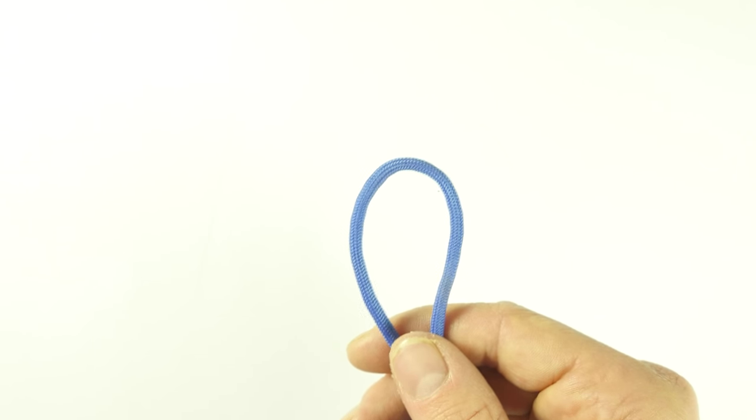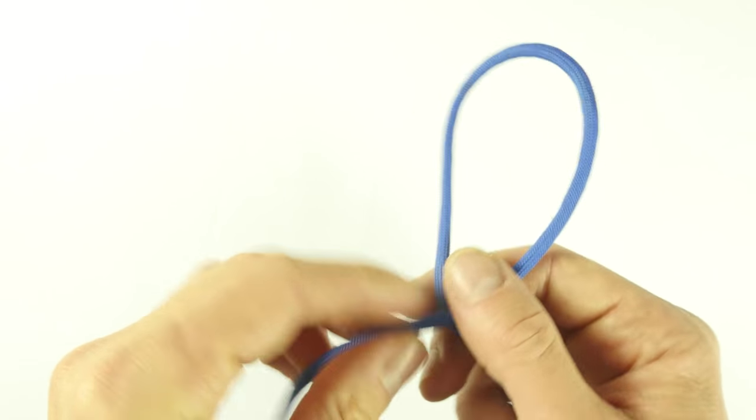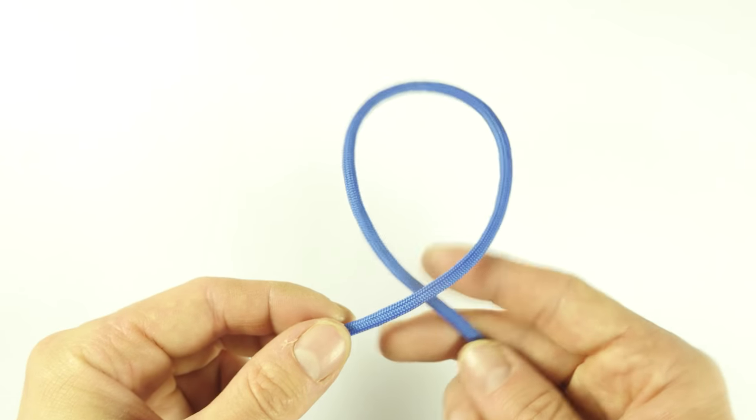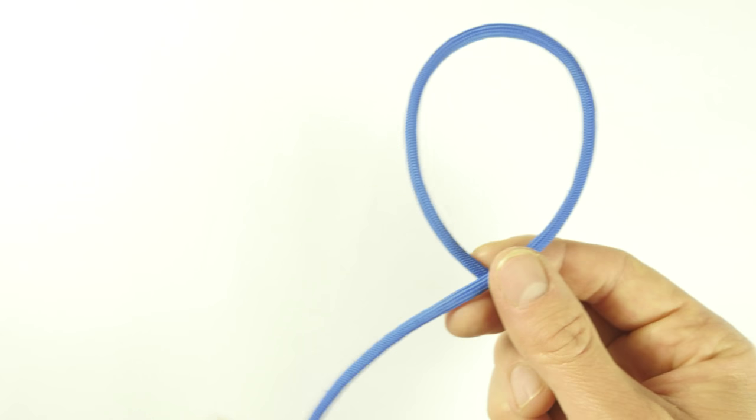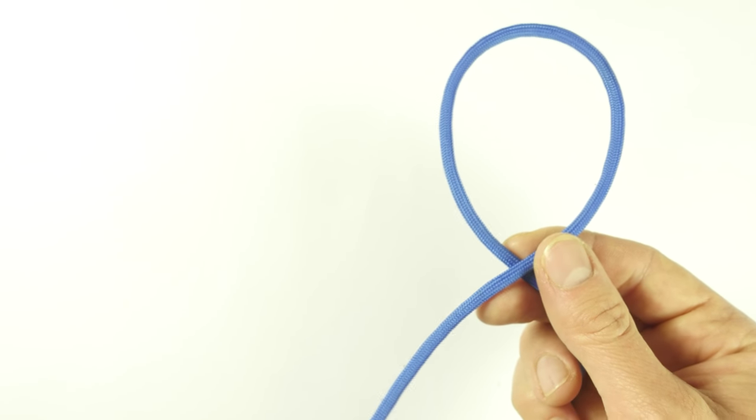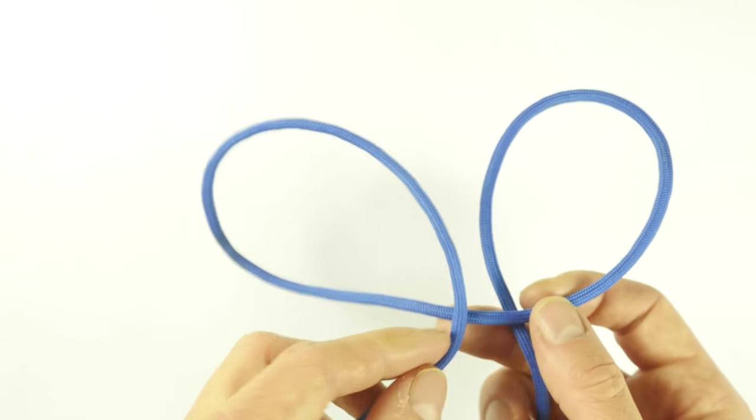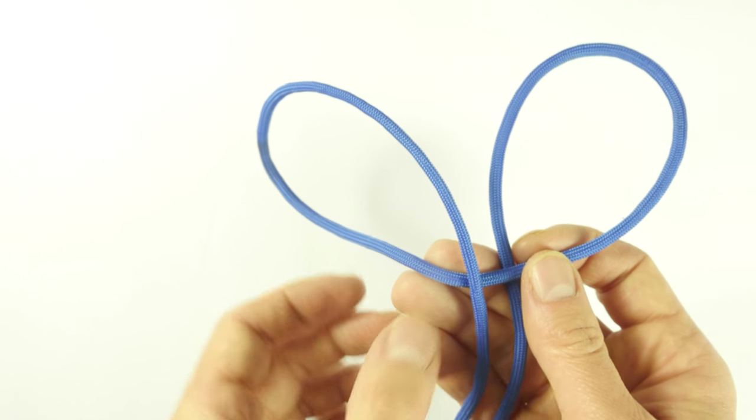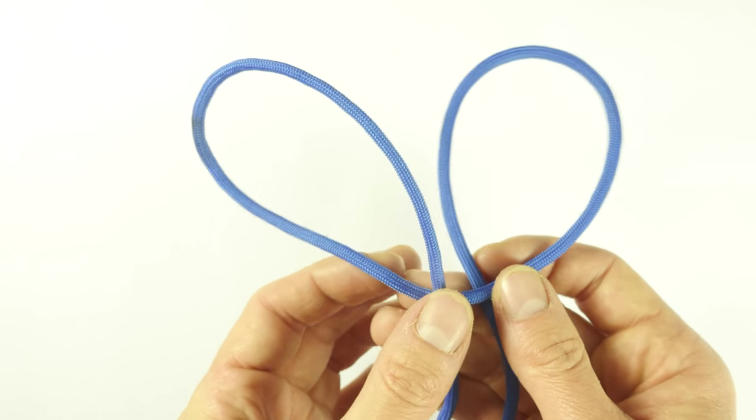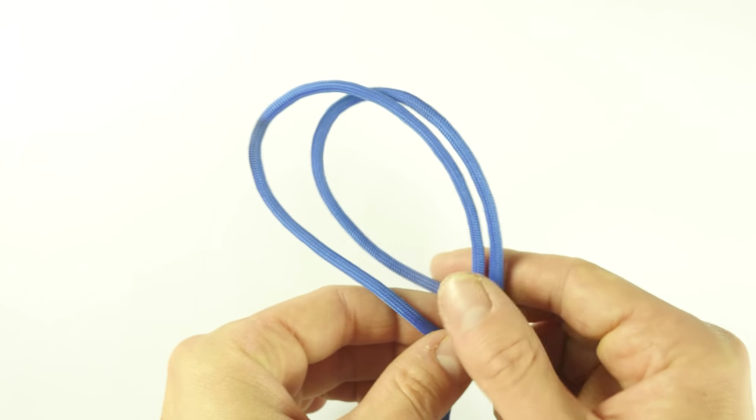To tie the boa knot, take a piece of cordage, make a loop, so a simple loop. Create a second one exactly the same way, like this, and place the second loop over the first one.